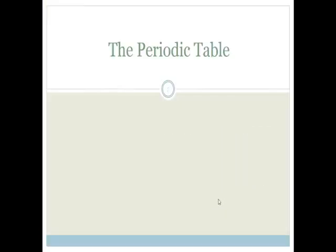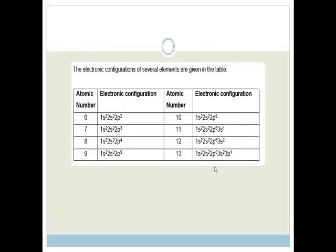Good day, grade 10s. In this revision lesson, we're going to be looking at some questions on the periodic table. It says, electronic configurations of several elements are given in the table. So we've got the atomic number, and then we've got the electronic configuration.